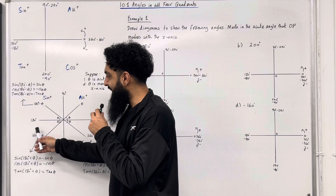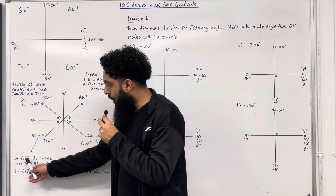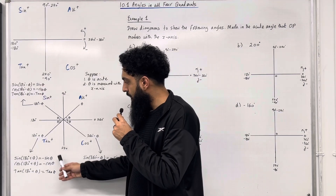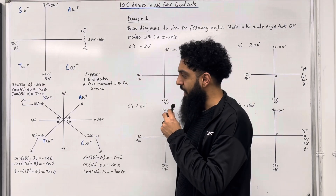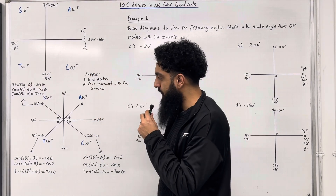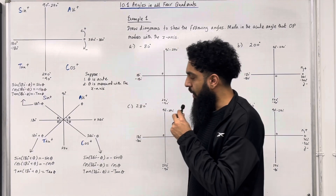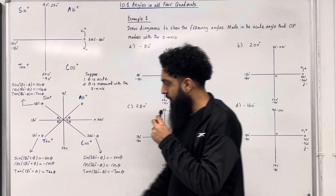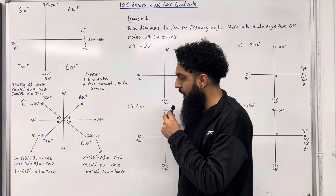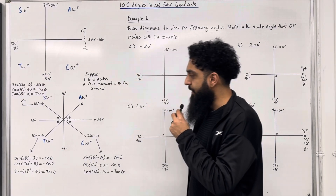Moving on to 180 plus theta: sine of (180 plus theta) is minus sine theta, because in this quadrant sine is negative. Cosine of (180 plus theta) is minus cos theta, because in this quadrant cosine is negative. On the other hand, tan of (180 plus theta) is positive tan theta, because in this quadrant tan is positive.